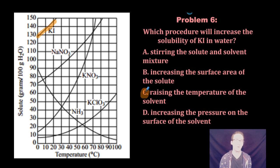The only thing that we can do to increase the solubility of potassium iodide in water is to raise the temperature. Answer choice D, increasing the pressure - remember pressure only affects gaseous solutes, and potassium iodide is a solid ionic salt. And we're done.